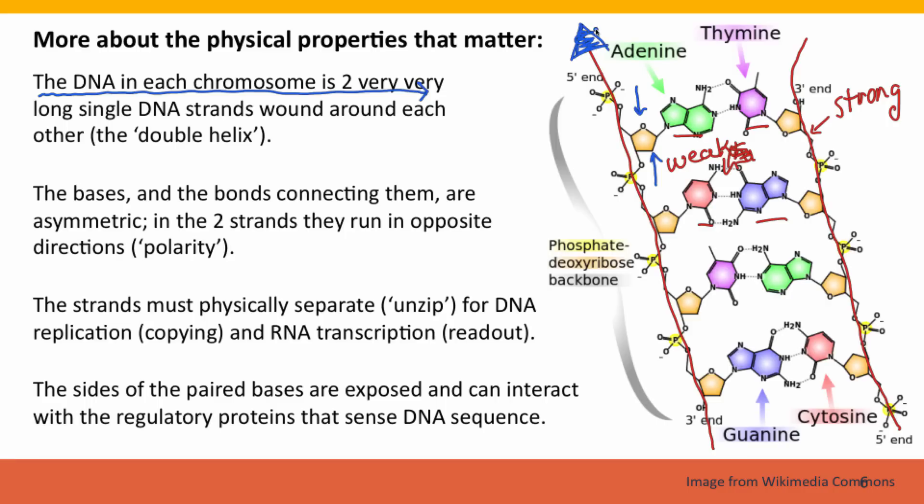We refer to the ends by numbers: three prime and five prime. We would put an arrow at the five prime end. So the other strand is running in the other direction, from its three prime end.